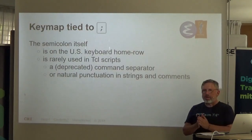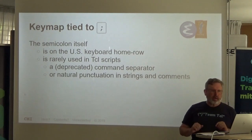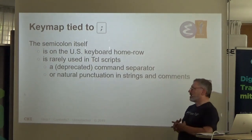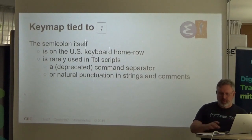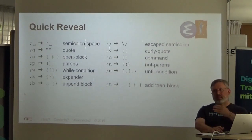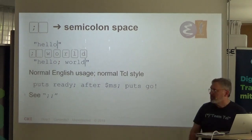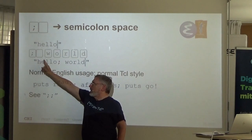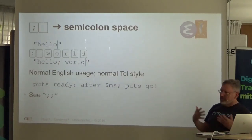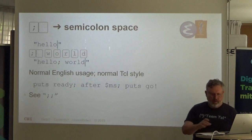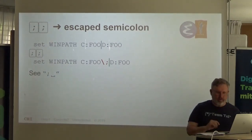So what I did is I made a bunch of shortcuts tied to the semicolon, because the semicolon on my keyboard is very easy to find — I know where that is. It's on the home row. It's rarely used in Tcl scripts. I won't have to escape it often, and the natural punctuation is always semicolon space. So a quick reveal: I've got about a dozen frequently used shortcuts. If I'm typing 'hello' and I type semicolon space 'world,' it looks just like you would expect. The shortcut semicolon space turns into semicolon space — don't have to think about it. If I type semicolon twice in a row, I get it escaped without having to search for that backslash key.